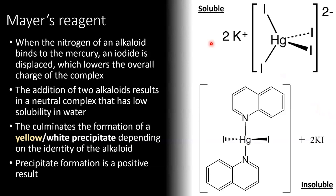On the right we can see the soluble form of mercuric iodide — it's an ionic species with a two-minus charge, which is balanced by two potassium ions. Below it is the insoluble mercury-alkaloid complex, and we can see that this liberates two equivalents of potassium iodide. Given that the complex is no longer charged, it is much less soluble in water, giving rise to the precipitate.